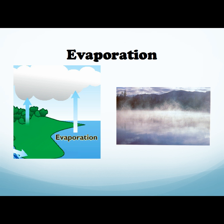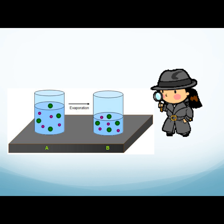The first part of the water cycle we will talk about is evaporation. Evaporation is when the sun heats up the water on the ground and in the rivers, lakes, and oceans, and turns it into water vapor. This water vapor then moves up into the air. A lot of times this process is completely invisible to us.